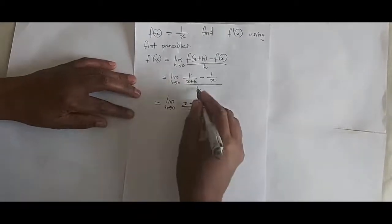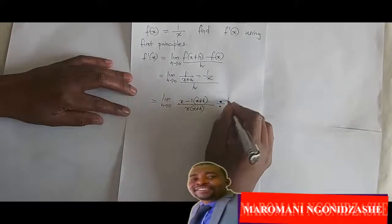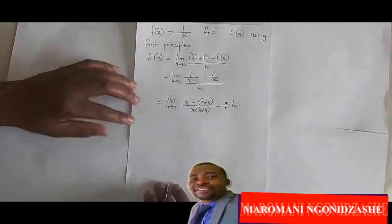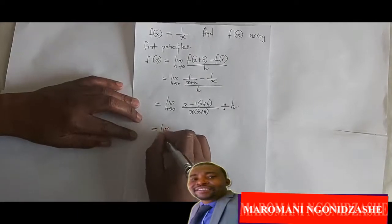Everything over h is just like to say divided by h, which means it's now equal to limit as h approaches 0 of.